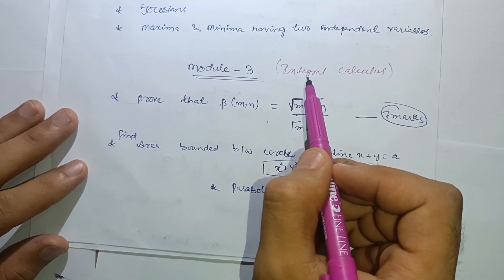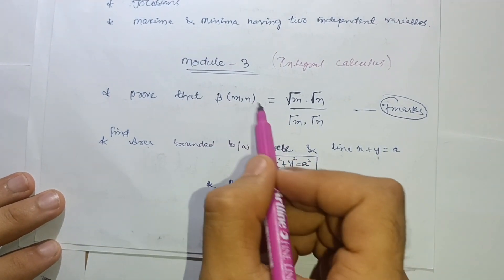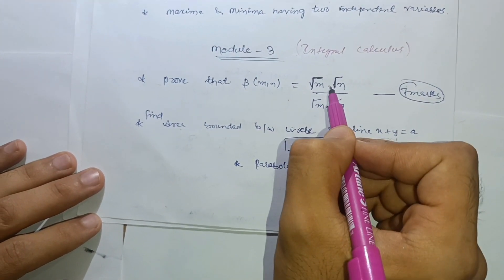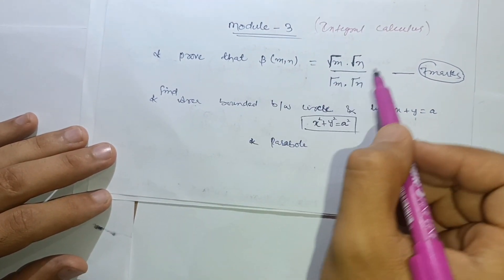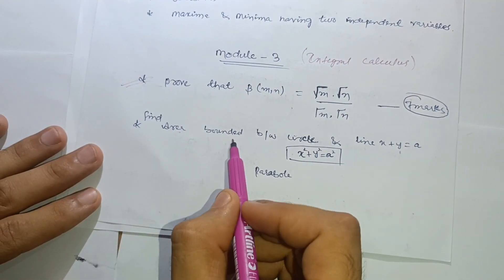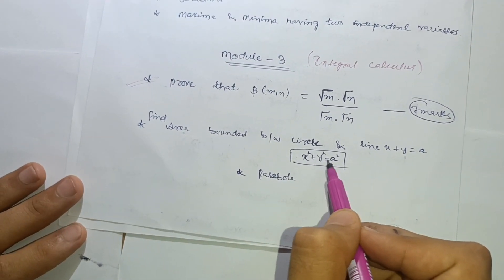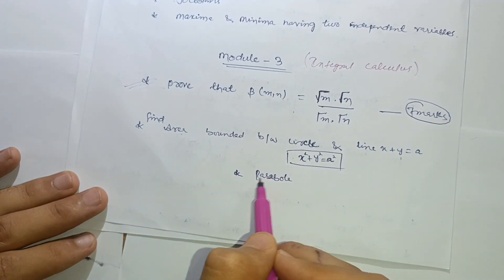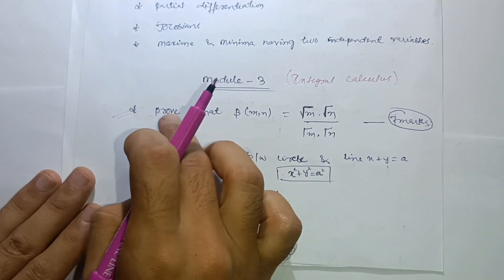Module 3 is the most important but also the most typical module — integral calculus. For passing purposes, attempt at least one question: prove that β(m, n) = Γ(m)·Γ(n) / Γ(m+n). This is a definite question. There are also questions on finding the area bounded between a circle (x² + y² = a²) and a line (x + y = a), or the area bounded between two parabolas — go through these if you can.